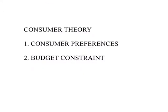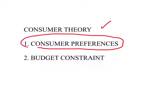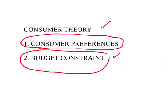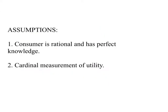We are trying to understand the behavior of one consumer — that is consumer theory. This can be broken down into two parts. Number one is consumer preferences: do you prefer Honda Accord over Ford Taurus, or the other way around? The second part is the financial reality that all of us face — the budget constraint. I may prefer a Porsche over a Ford Taurus, but I may not have the money to buy it.